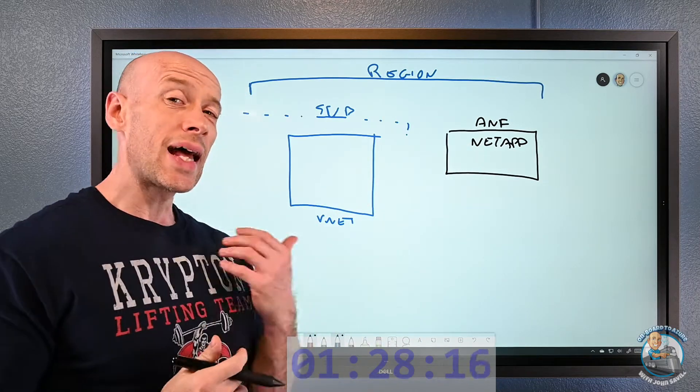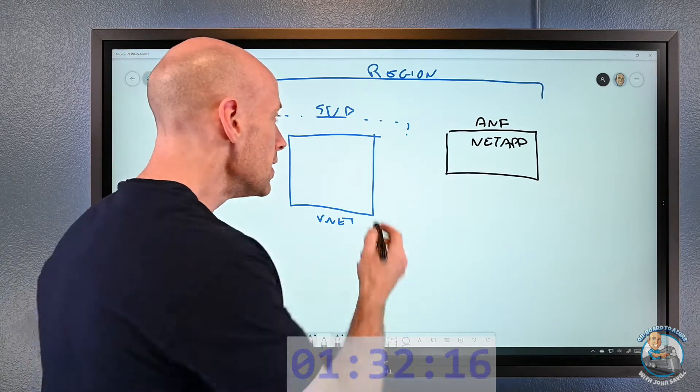Then you can think about me as the customer. Within a region I have subscriptions. A subscription can span multiple regions, but imagine I've got my subscription. In that subscription I can create one or more VNets. The way Azure NetApp files interacts with my resources uses a delegated subnet, which has been used by other services as well.